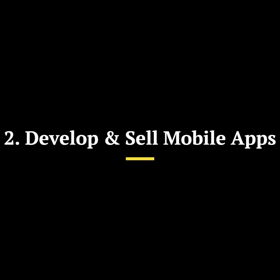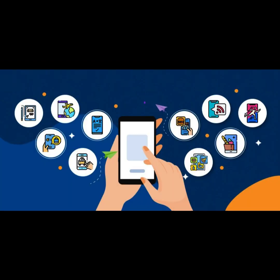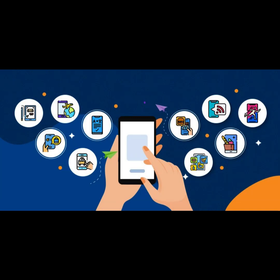Two: develop and sell mobile apps. Step one, choose an app idea. Select a mobile app idea that appeals to a specific target audience or solves a particular problem. Consider platforms like iOS, Android, or both. Step two: design and develop the app, adhering to platform-specific guidelines and standards.